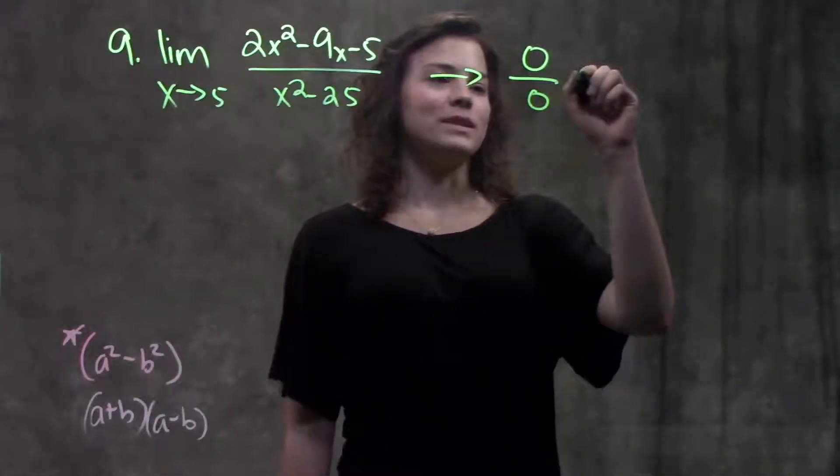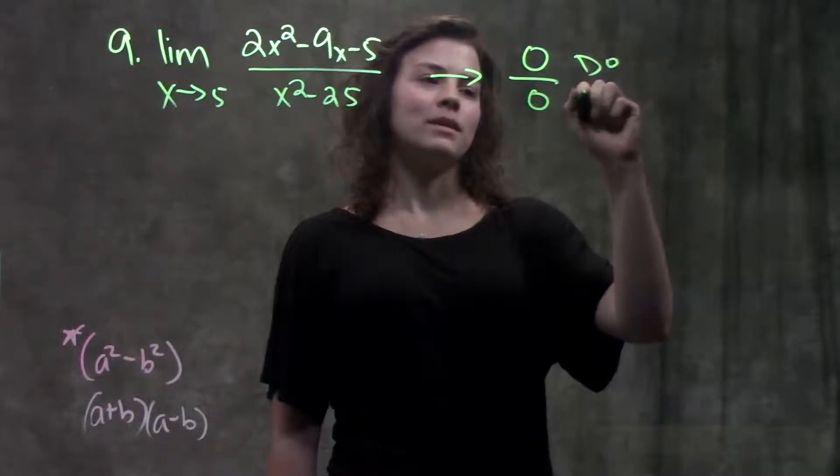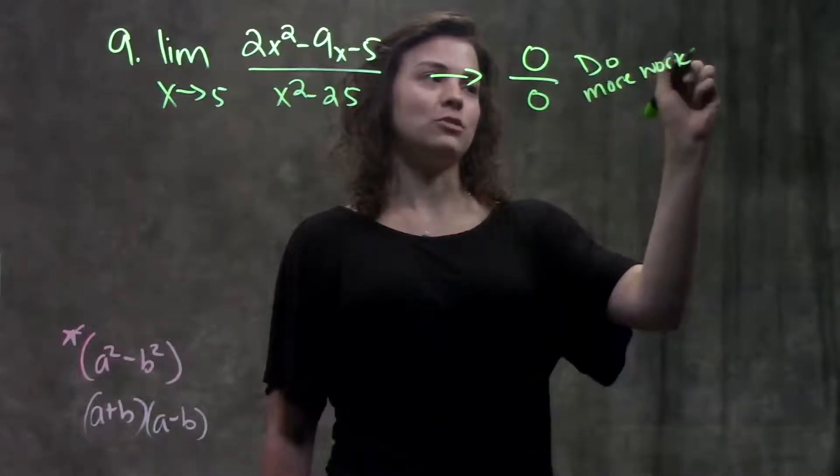Okay, 0 over 0. When you see this, you think indeterminate form, not a valid answer. That means that we need to do more work.